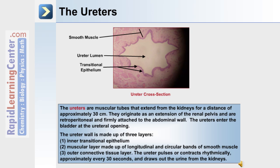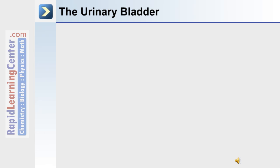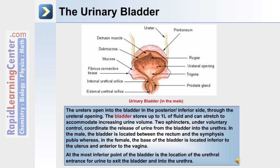The ureters originate as an extension of the renal pelvis in the kidney and are retroperitoneal and firmly attached to the abdominal wall. The ureter wall is made up of an inner transitional epithelium, a muscular layer of both longitudinal and circular bands of smooth muscle, and an outer connective tissue layer. The ureter itself pulses or contracts rhythmically approximately twice a minute, drawing urine out from the kidneys.